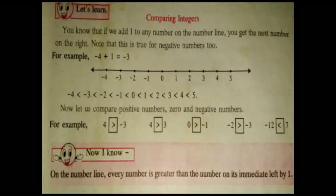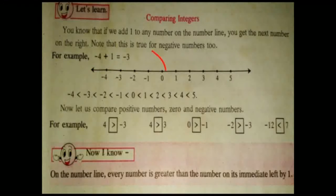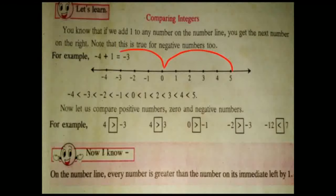Before I begin Practice Set 7, I will teach you an example on comparing integers. This is the number line. Numbers on the right side of 0 are all positive numbers; numbers on the left side of 0 are all negative numbers. Minus 4 is the smallest number and 5 is the greatest number. Zero is greater than all the negative numbers but less than positive numbers.